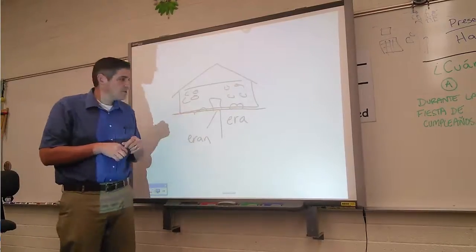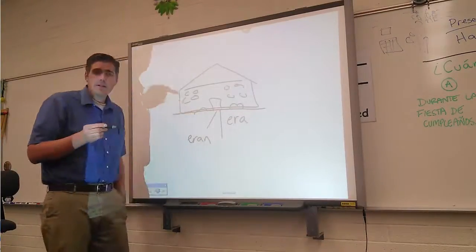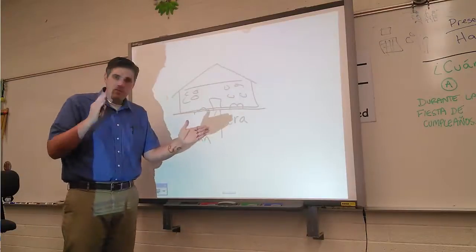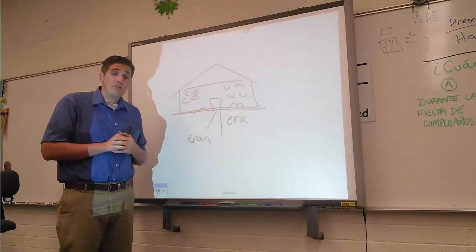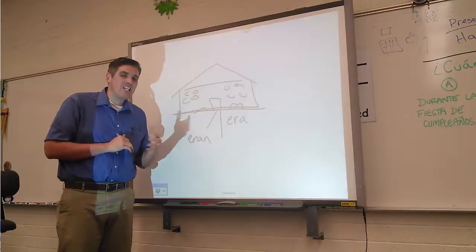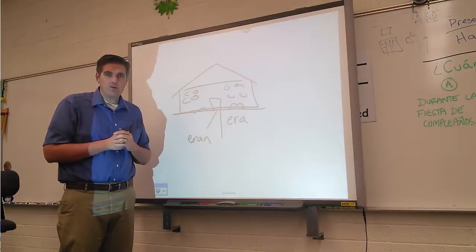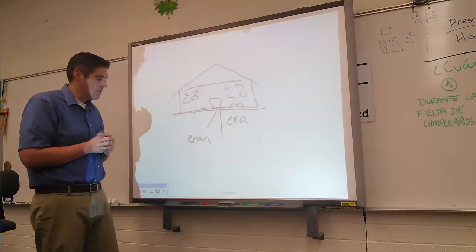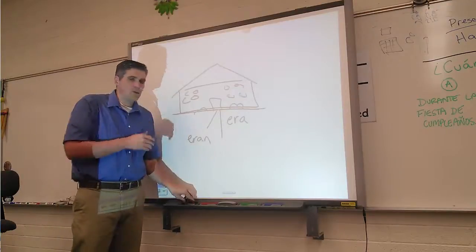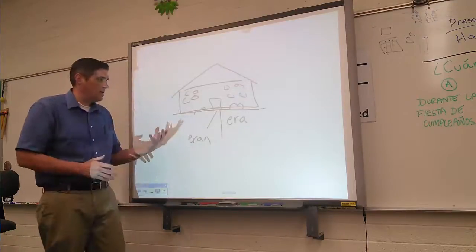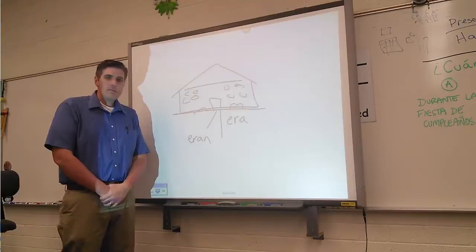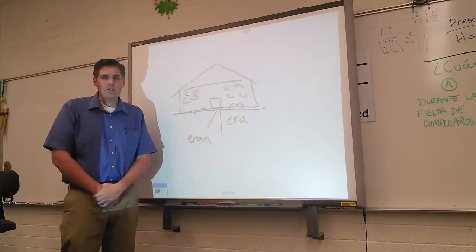The place this gets confusing is when you're talking about the age of somebody. Because you want to say, well, age has specific beginning and specific end. But if you're describing them, we'll still use the imperfect. Tenía quince años. Tenía dieciséis años. So also describing things, people, places in the past, we'll typically use the imperfect also.